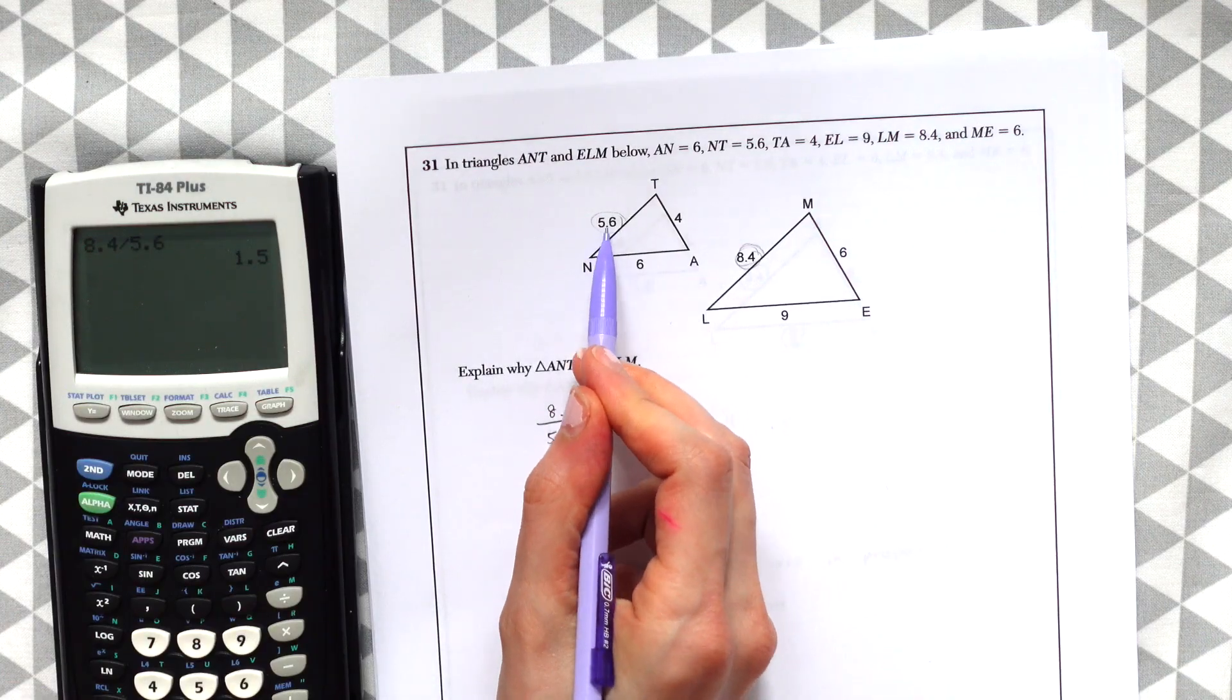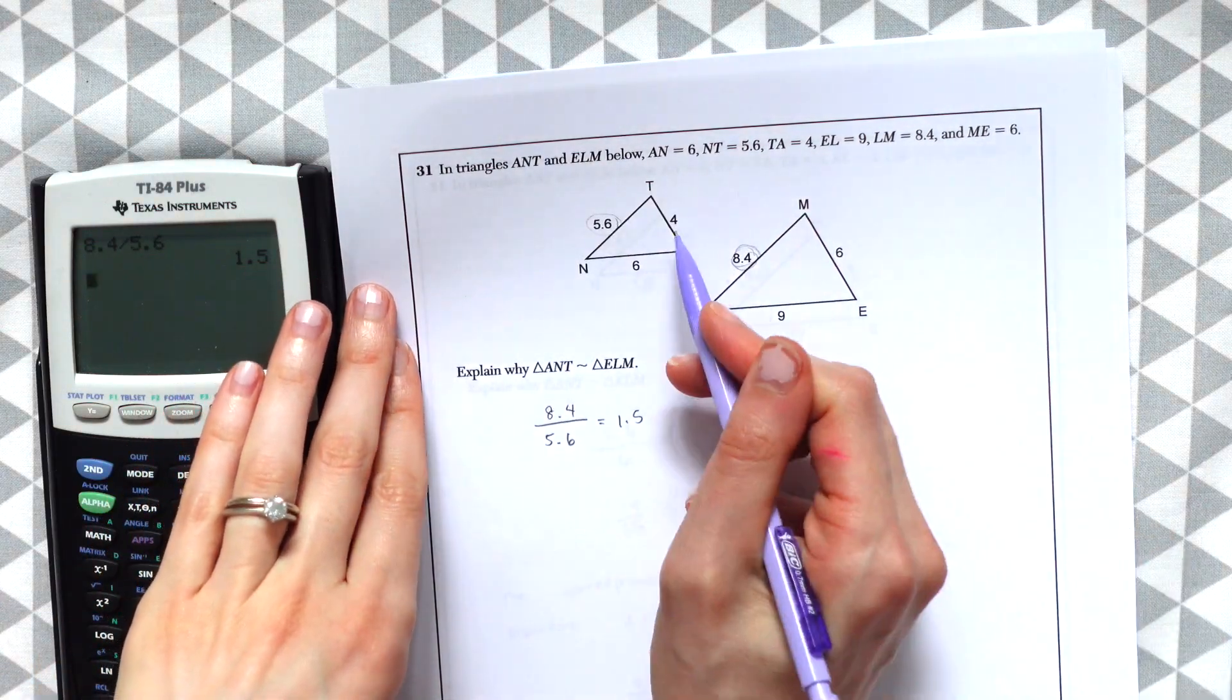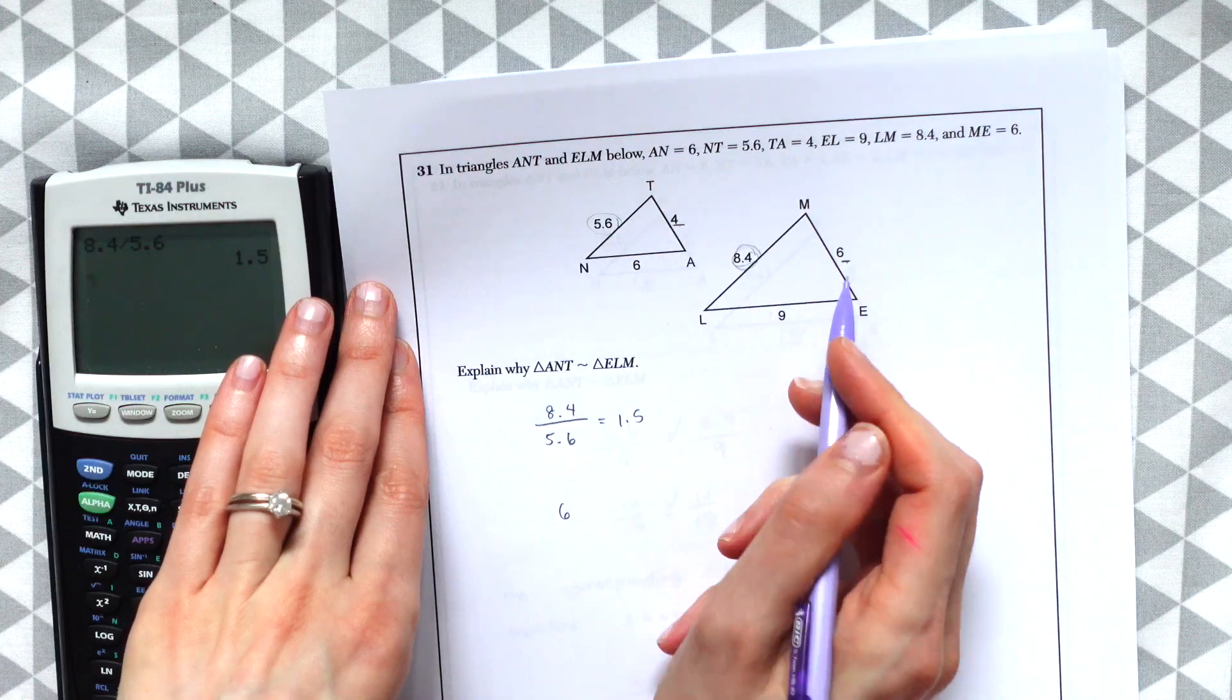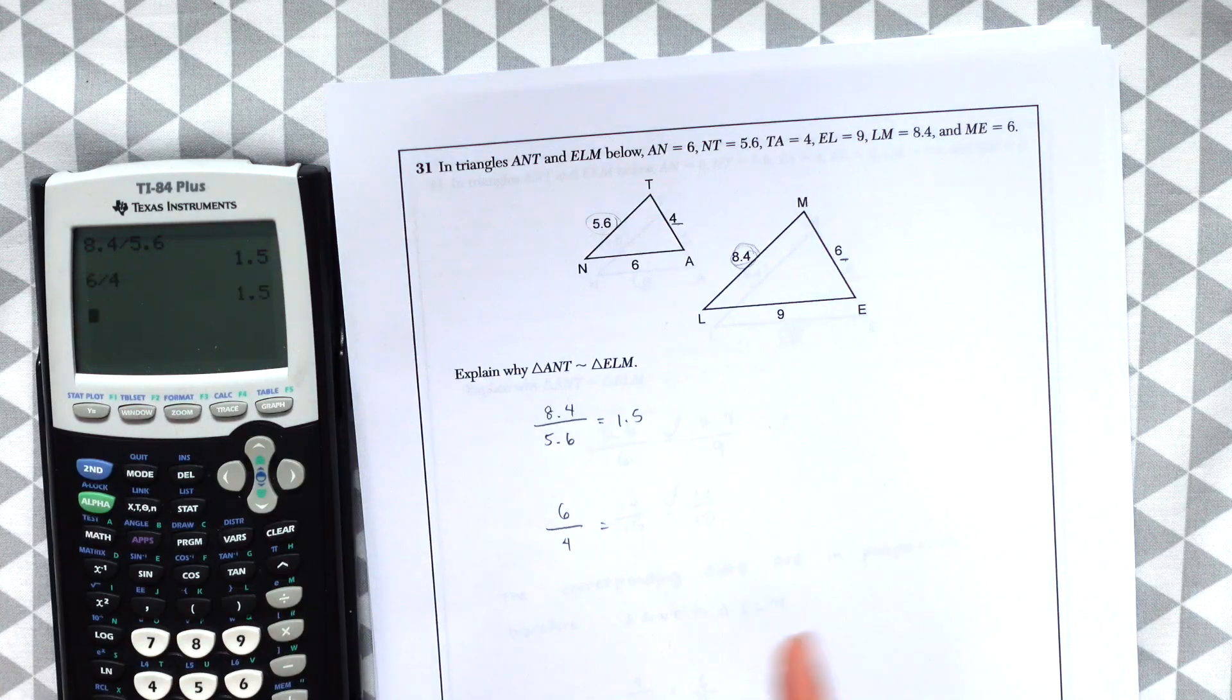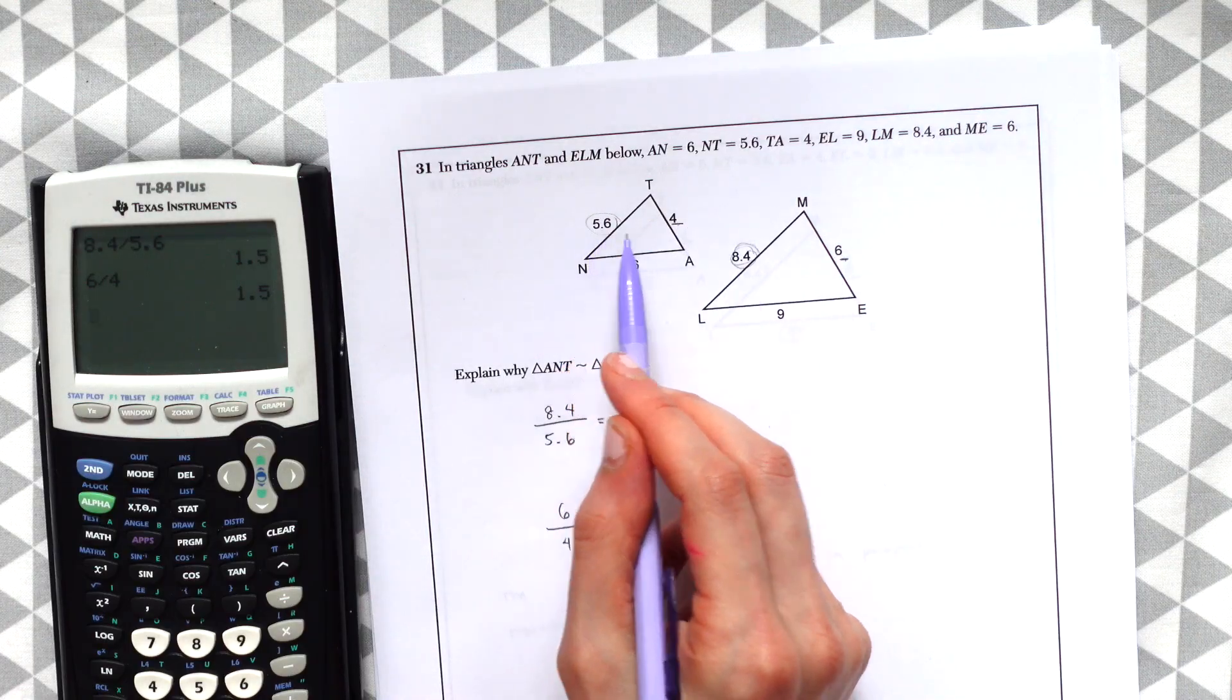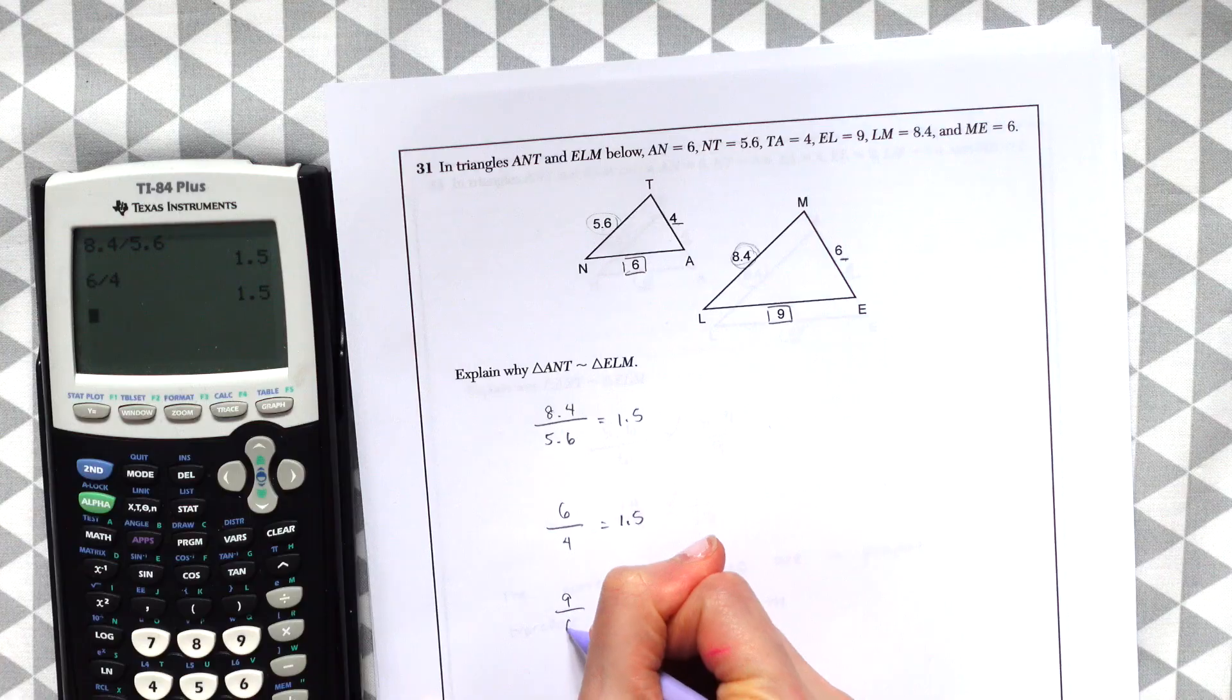So the scale factor from this side to this side is 1.5. Now let's try another pair of corresponding sides. So let's try 4 and 6. So let's see what you multiply times 4 to get to 6. We're going to do 6 divided by 4. And you can see we also get 1.5. So again, 4 times 1.5 will give us 6. 5.6 times 1.5 will give us 8.4. And now the last pair of corresponding sides. Let's divide 9 divided by 6, which is 1.5.